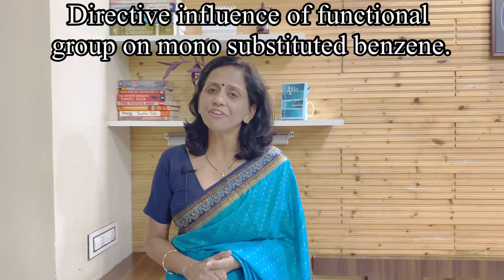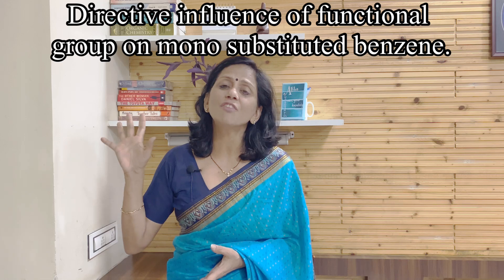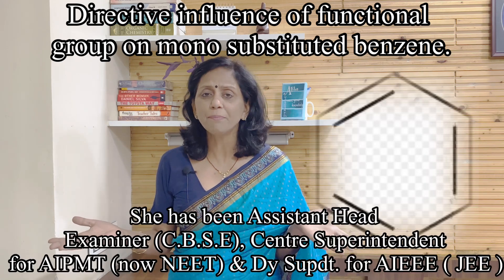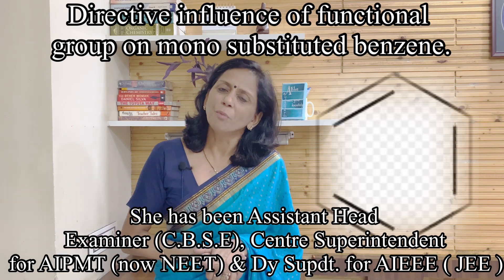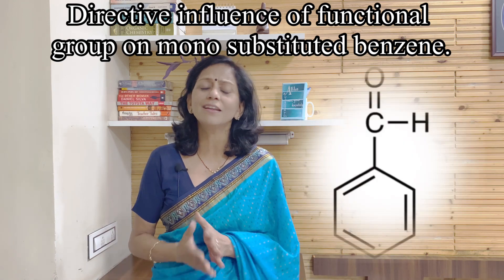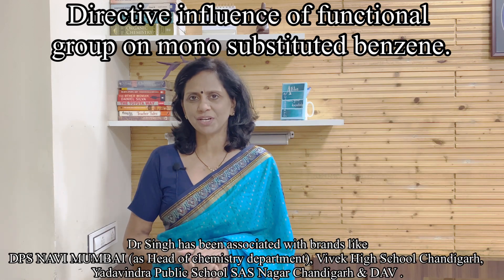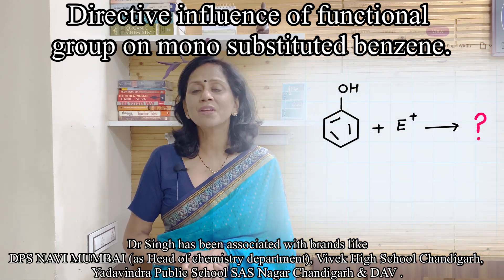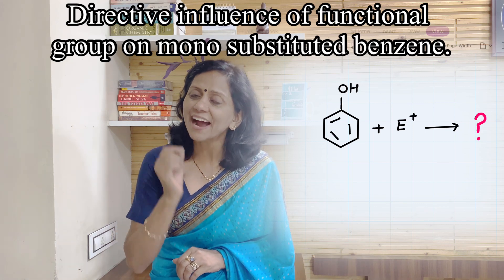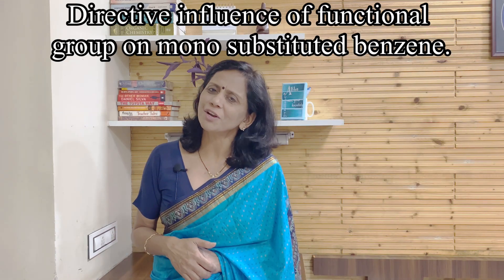That is the directive influence of the functional group in the monosubstituted benzene. If we have a benzene and we want to substitute an electrophile on it, it can be substituted in any place. Whenever there will be a monosubstituted benzene, maybe toluene, phenol, nitrobenzene, benzaldehyde, any of the monosubstituted benzene, if you want to further substitute it with the help of an electrophile, where that substitution will take place will be governed by the monosubstituted benzene. Let's move over to screen for a better explanation.